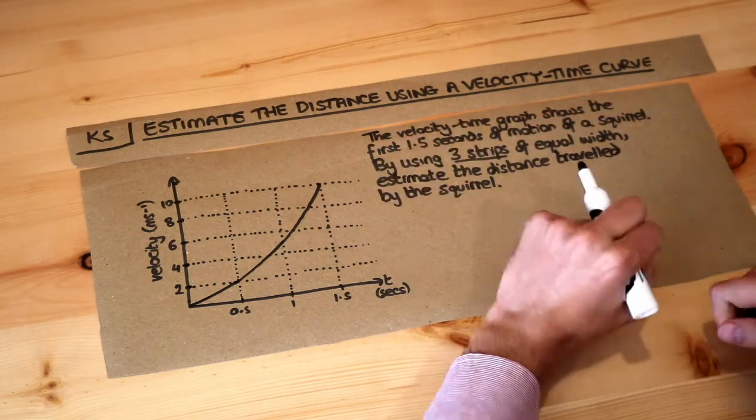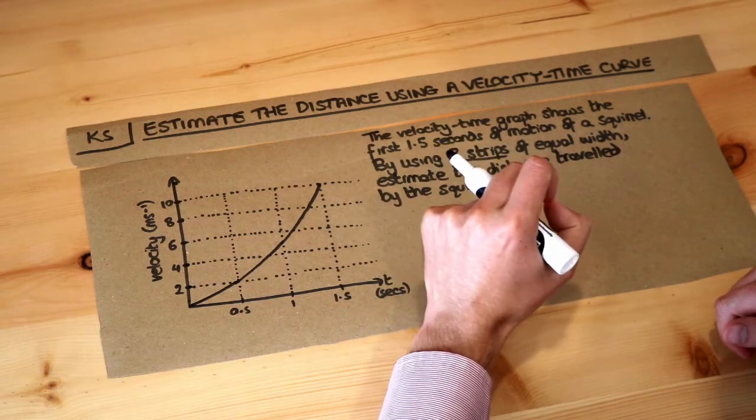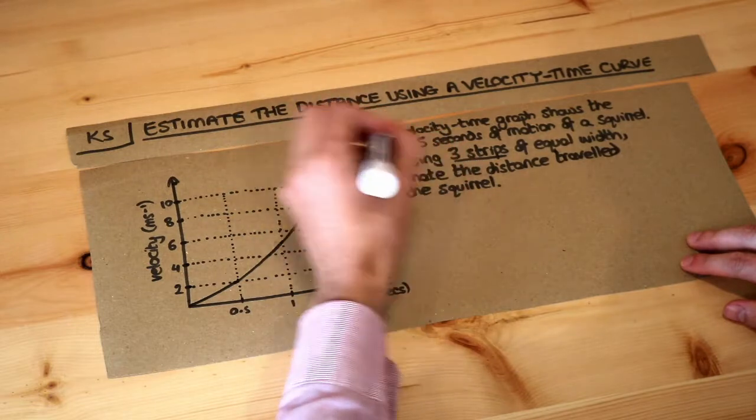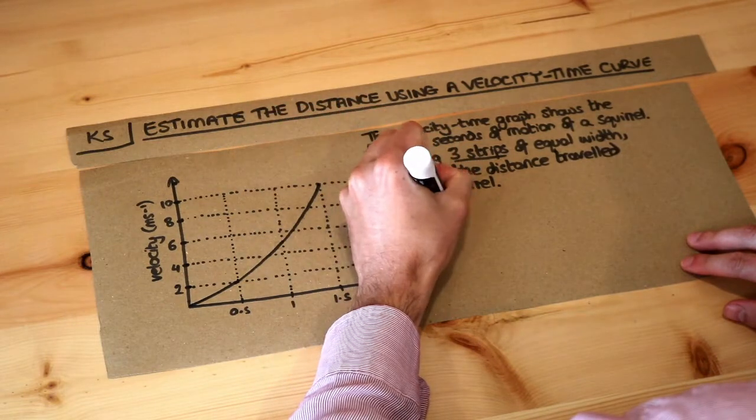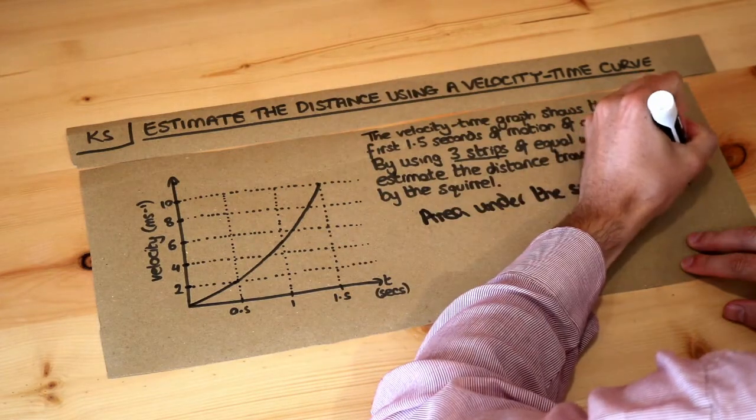Now hopefully you've watched a previous video where we actually calculated the exact distance traveled by something using a velocity-time graph, but where we had straight lines involved. And you remember from that previous video that the area under the velocity-time graph, or the speed-time graph, is the distance traveled.